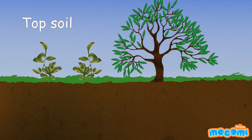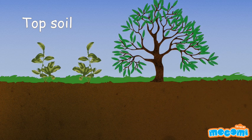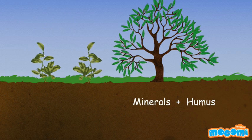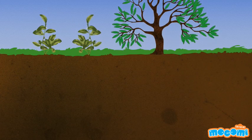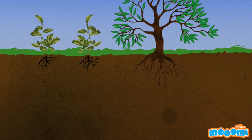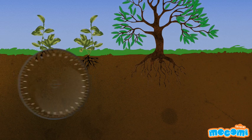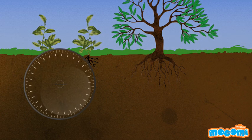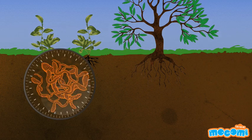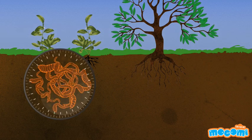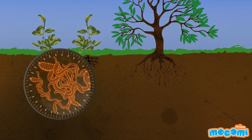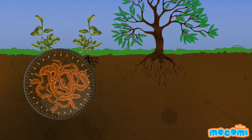Topsoil is the most useful part of the soil. It is dark in color because it is rich in minerals and humus. Plant roots also grow in the topsoil. Many living things like insects, worms, bacteria, and rodents live in the topsoil. It contains the decayed remains of dead plants and animals, which forms humus. Humus makes the topsoil very fertile.